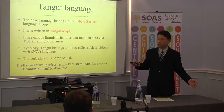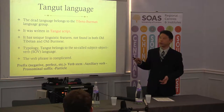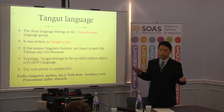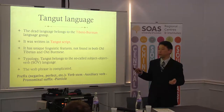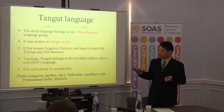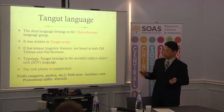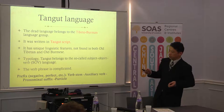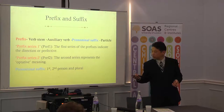The Tangut language belongs to the Tibeto-Burman language group. It was written in Tangut script, and the Tangut language has unique features not found in both old Tibetan and old Burmese. This is the general information on typology. Tangut belongs to the so-called subject-object-verb language type.